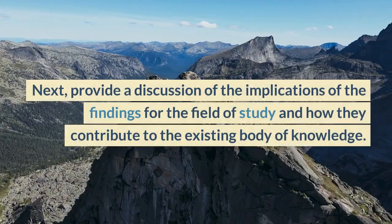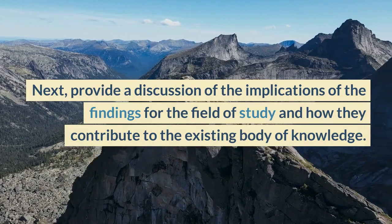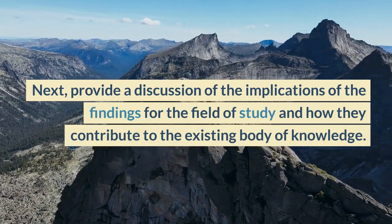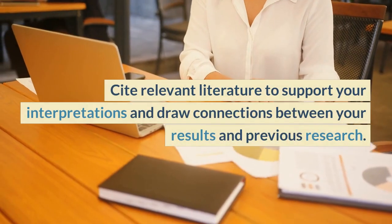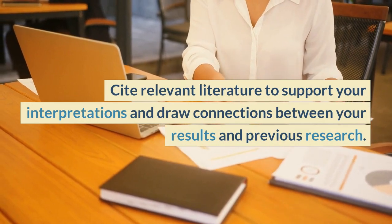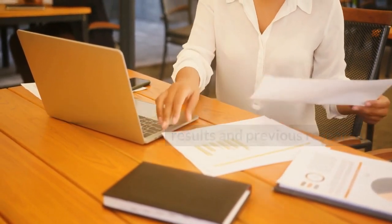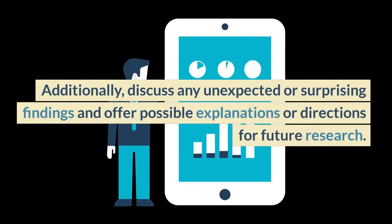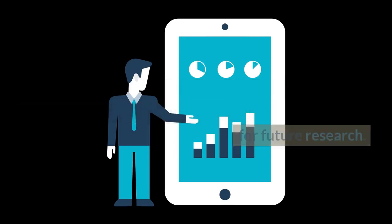Next, provide a discussion of the implications of the findings for the field of study and how they contribute to the existing body of knowledge. Cite relevant literature to support your interpretations and draw connections between your results and previous research. Additionally, discuss any unexpected or surprising findings and offer possible explanations or directions for future research.